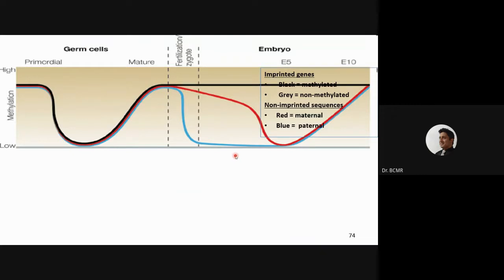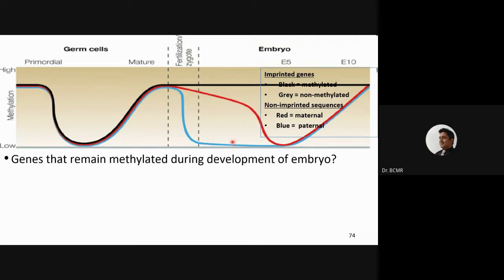Let's see if we can answer a few questions. Which genes remain methylated during development of the embryo? You can say the color. The answer is black — yes, the imprinted methylated genes. Can you give one example? IGF-2. IGF-2 of what — maternal or paternal? Because there are two, right? In one case it is imprinted.